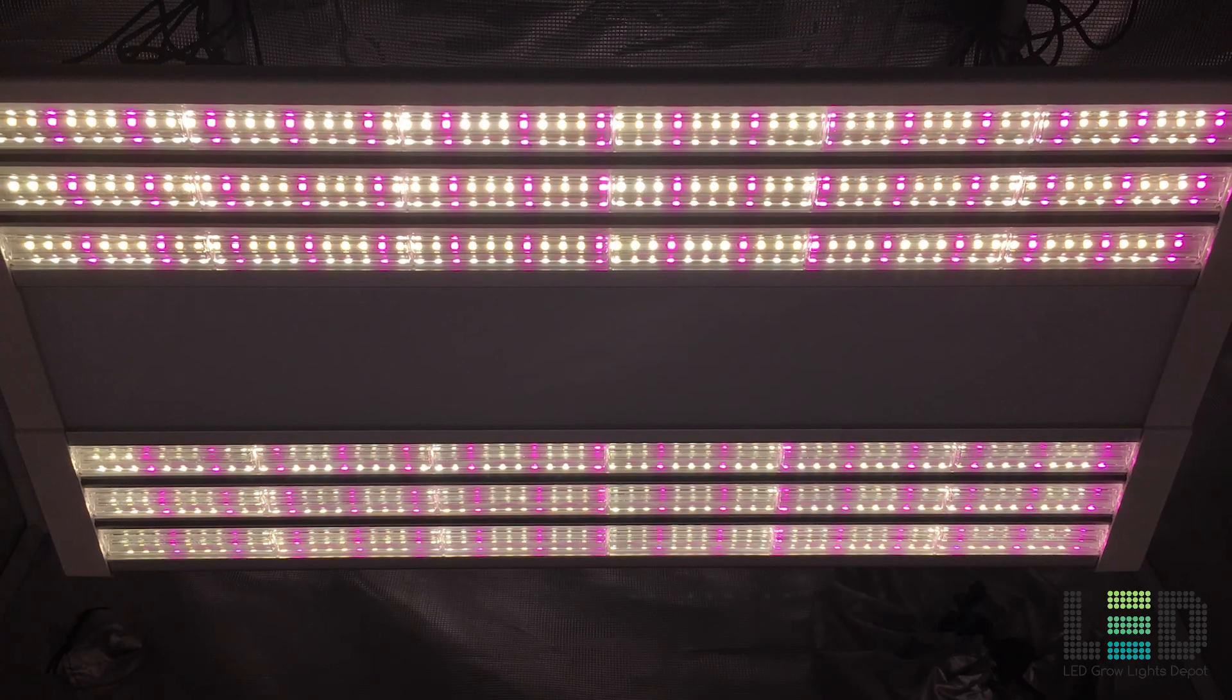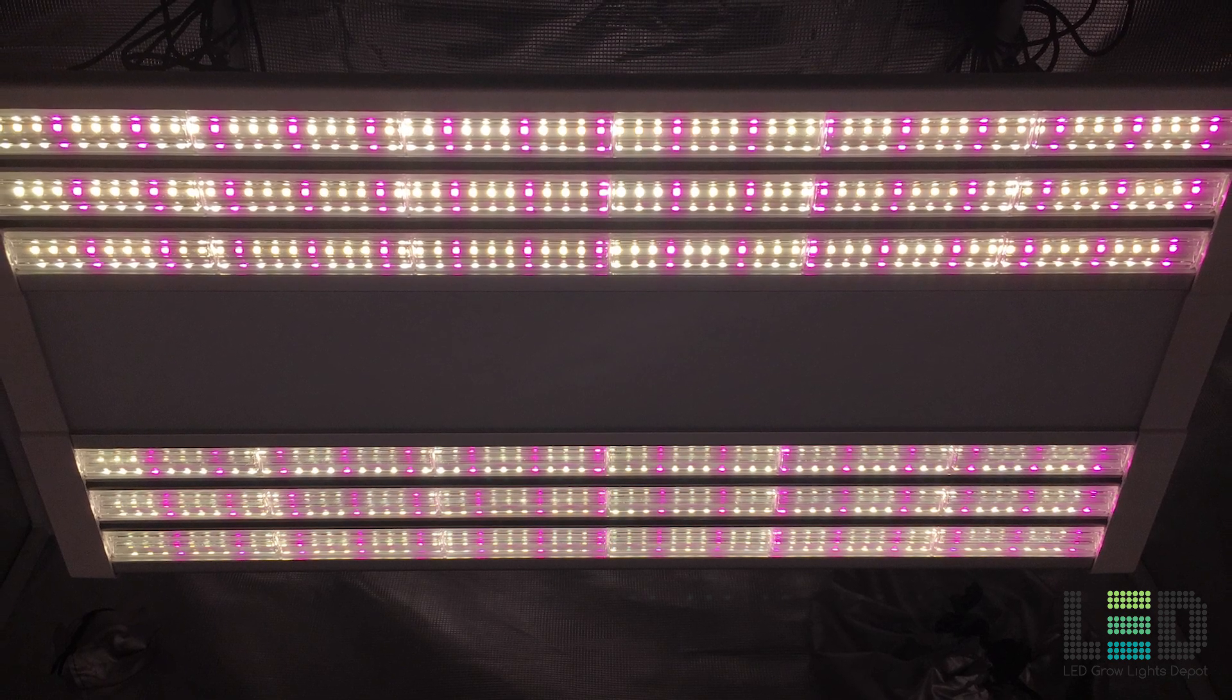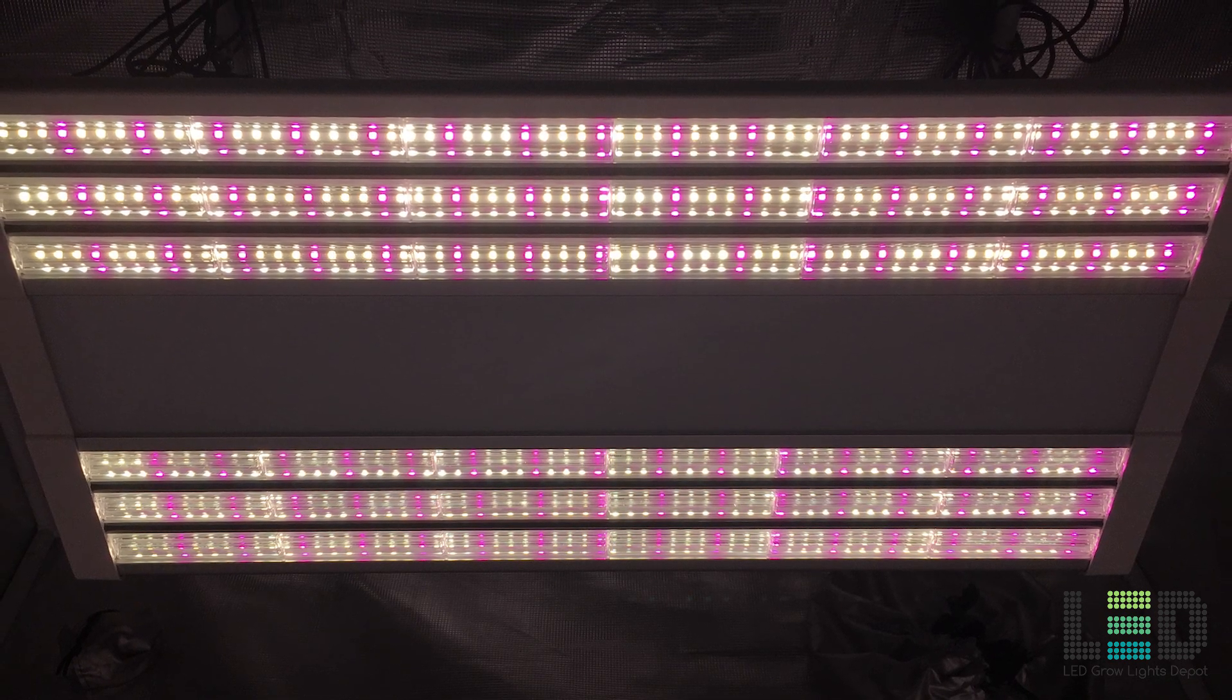The rectangular shape of the ES180 allows high modularity to fit any size grow space, square, or rectangular, and is ideal for growers looking to cover a 1.5 foot by 3 foot area or larger.